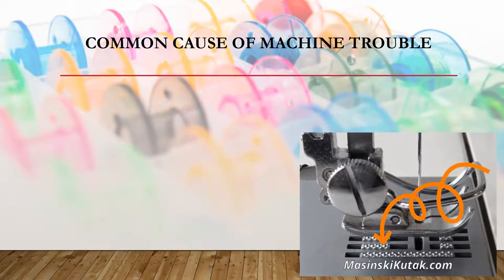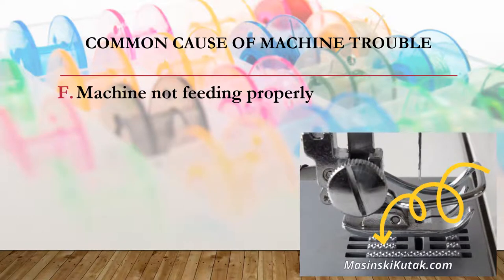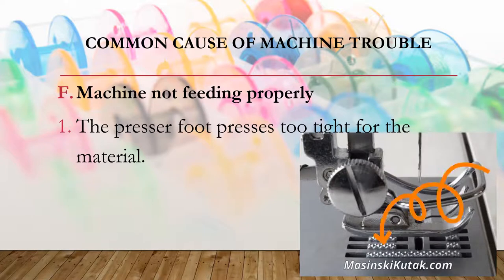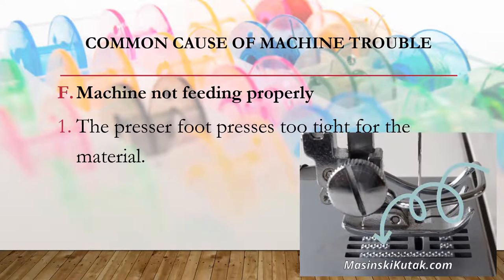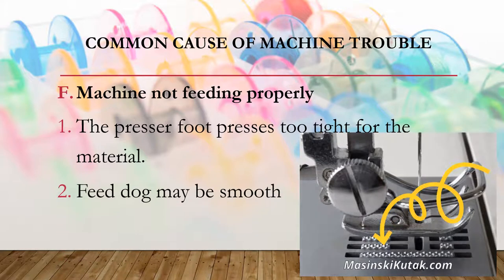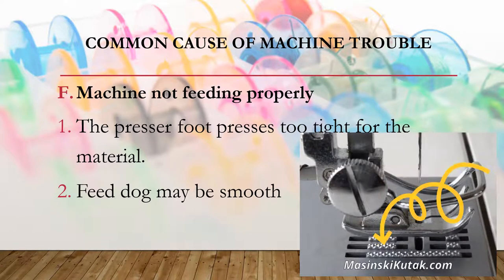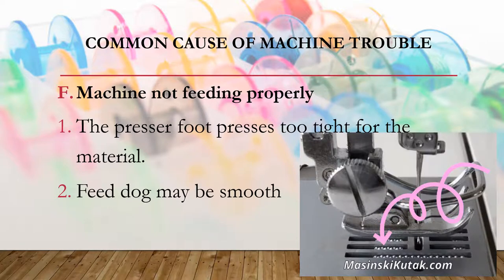Another sewing machine trouble is when your machine is not feeding properly. The presser foot may be pressing too tight for the material. You should adjust the thumb screws so that the presser foot does not press too much on the material. Another cause involves the feed dog becoming smooth. To avoid this, always lift the presser foot when winding so that the feed dog will not become smooth and the machine will feed properly.